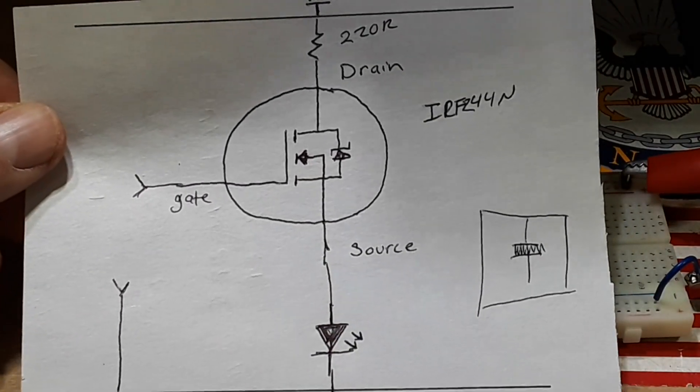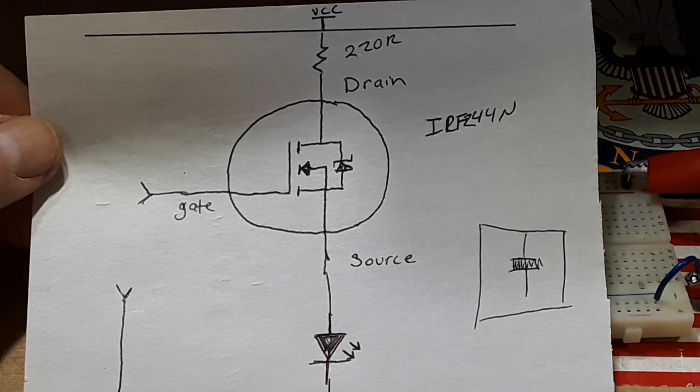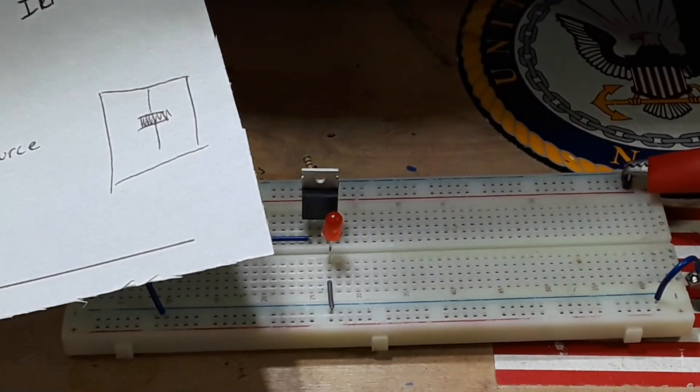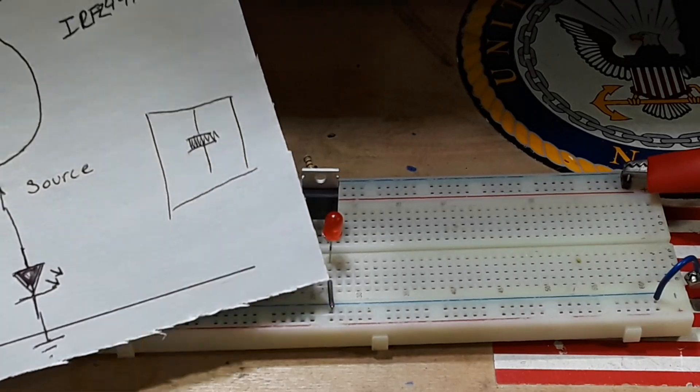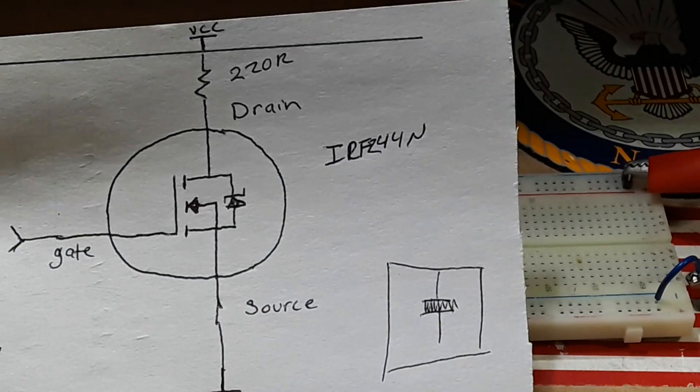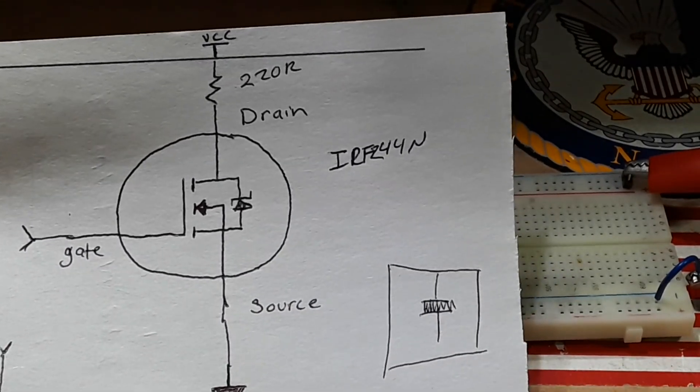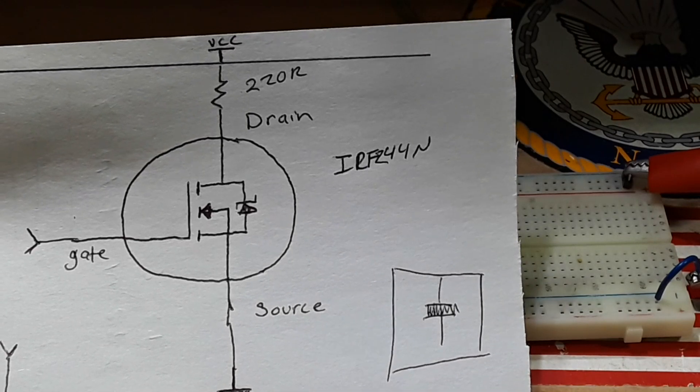Now of course this only works for low voltage DC applications. In this case I'm using it to switch the load of an LED, and I am current limiting that LED right here, which is also kind of current limiting the MOSFET because as you know, current is the same throughout the circuit.